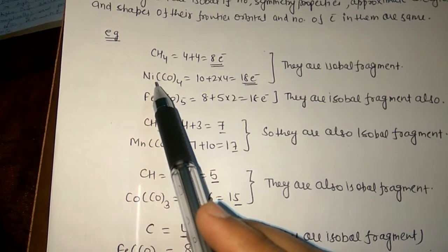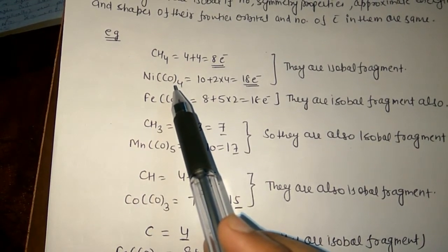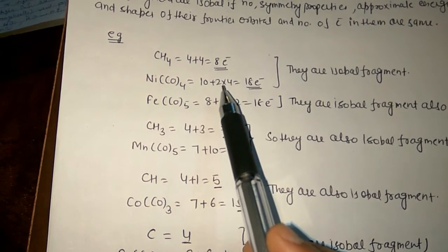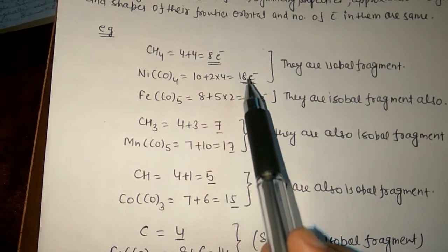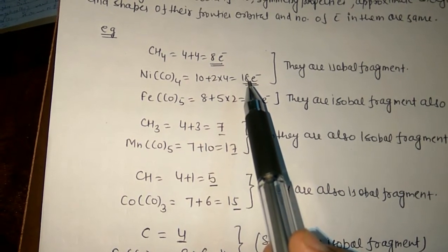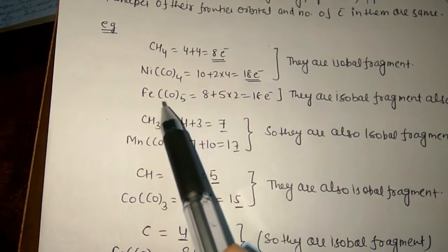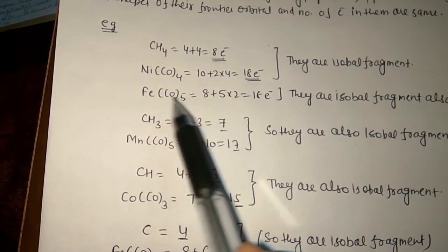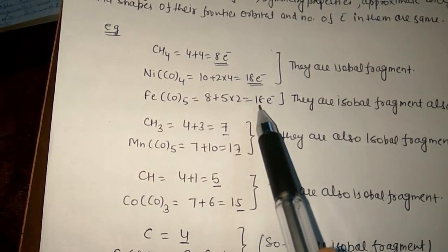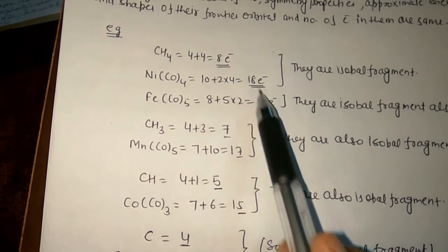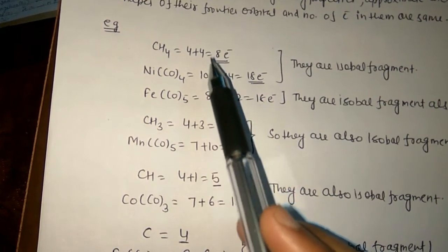Now we have two examples: tetracarbonyl nickel Ni(CO)4 and pentacarbonyl iron Fe(CO)5. For Ni(CO)4, nickel gives 10 electrons plus 2 electrons donated by each carbonyl, totaling 18 electrons — the last digit is 8, same as CH4. For Fe(CO)5, iron donates 8 electrons plus 5×2 = 10, giving 18 electrons total. Again the last digit is 8, so these are isolobal fragments.